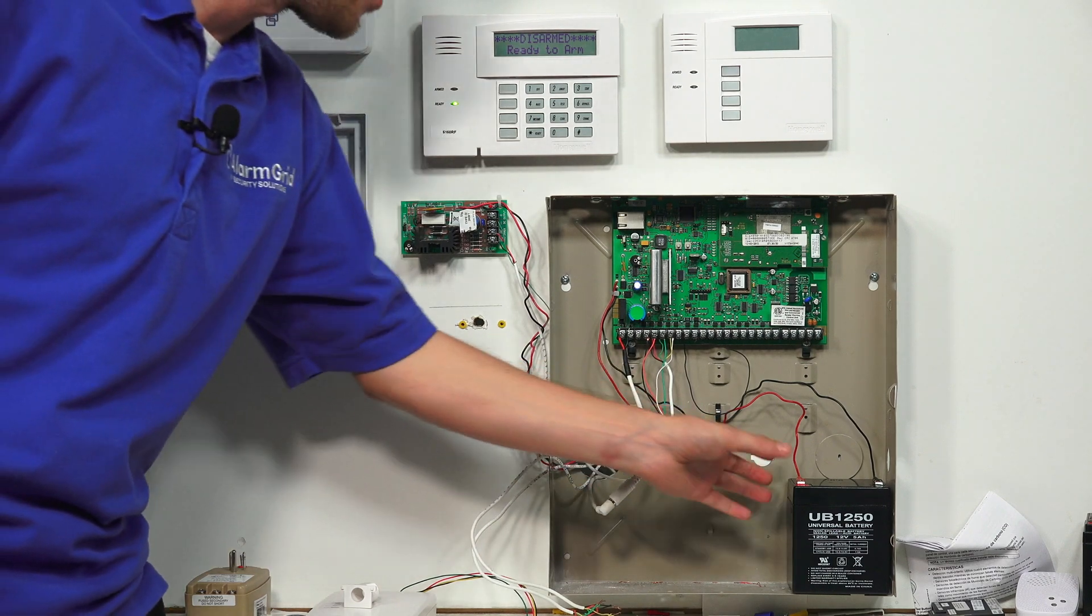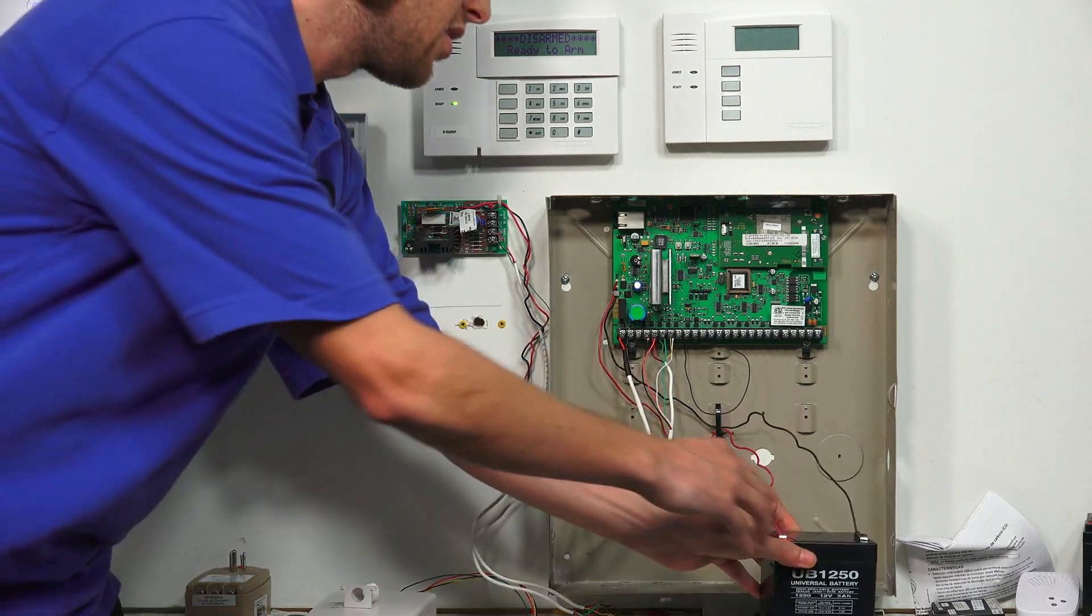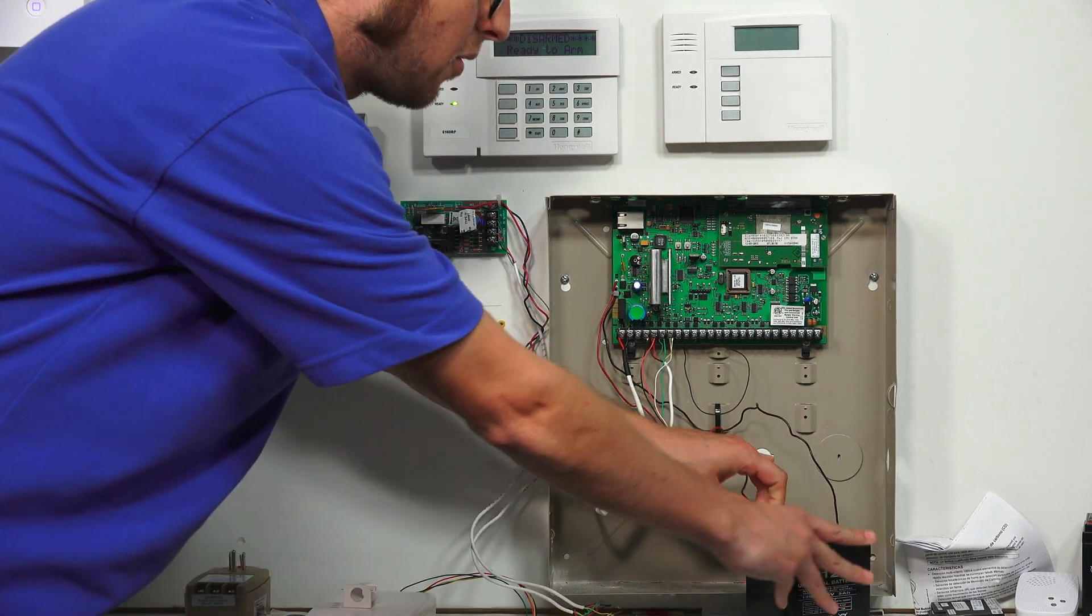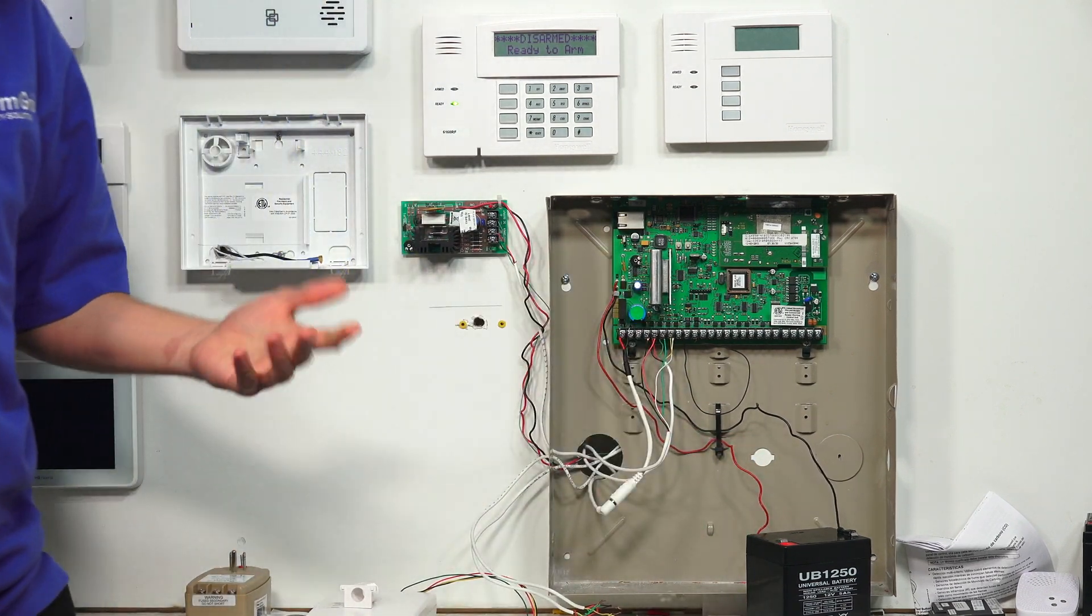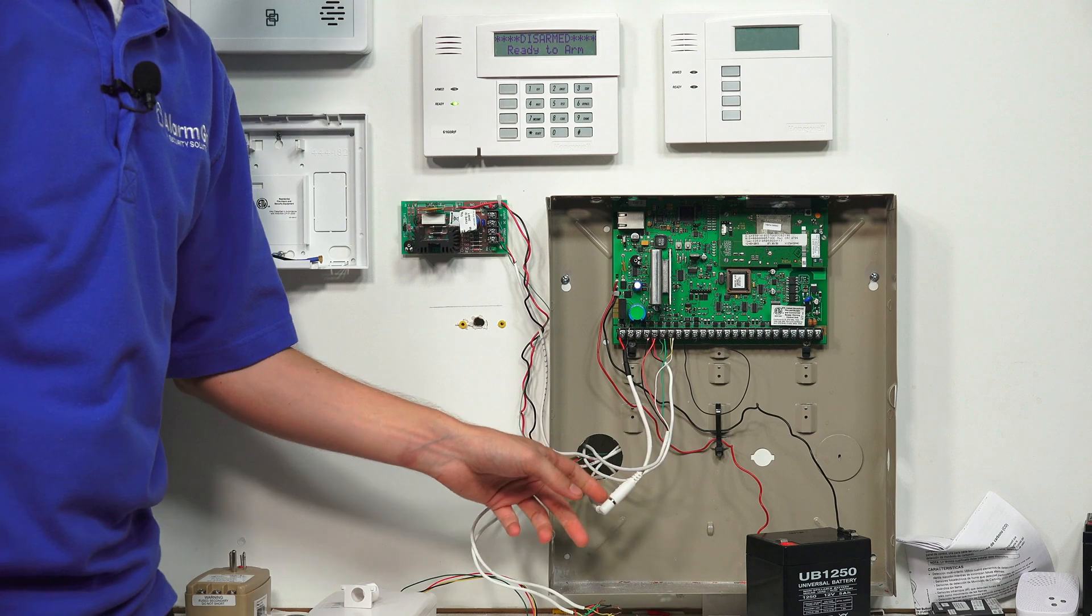So the first thing we want to do is power the system down. We're going to just undo the battery right here, just pull the connection there. If you're having trouble getting it, just twist it off and pull it off like that. And then we're going to do the transformer next.